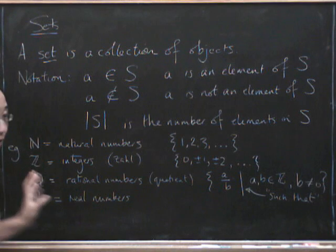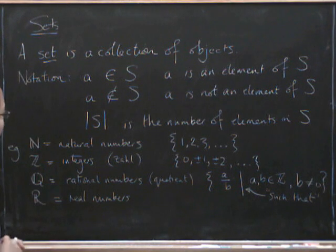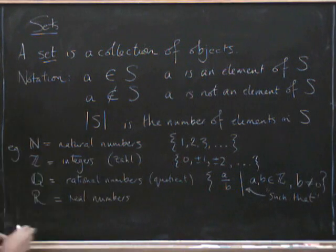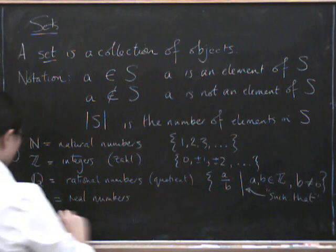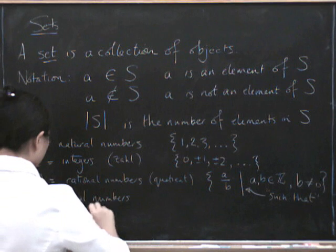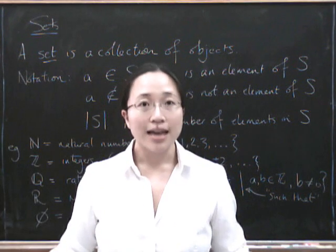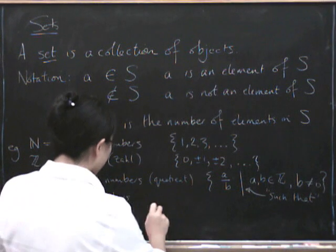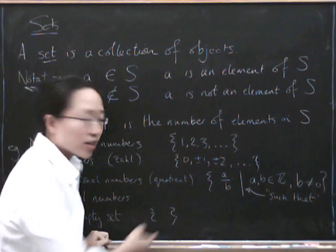Of course these are very large sets. In fact they're infinite sets. There are some much smaller sets that are also important. I wonder if you can see at the bottom of the board. Yeah I think you can. There's also the empty set. The empty set which is empty. It has no elements at all. So sometimes people write it as the curly brackets with absolutely nothing inside it.